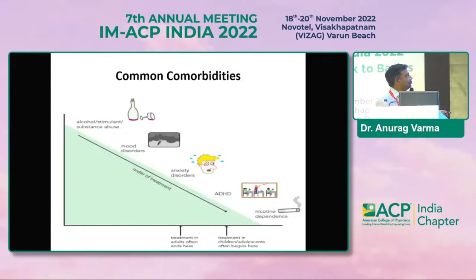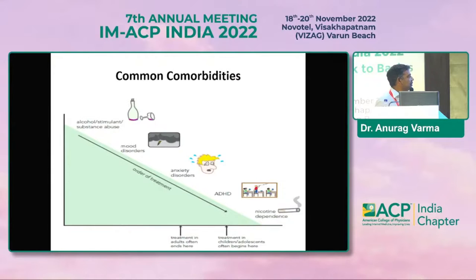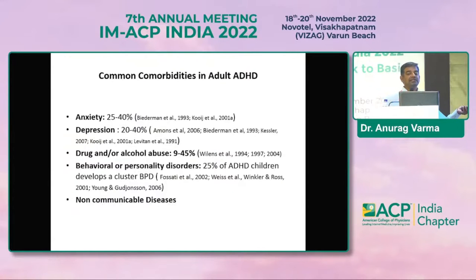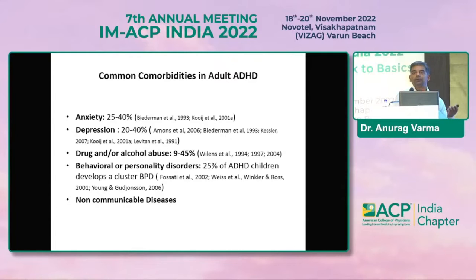In children you have certain kinds of comorbidities. With a slight change in adults, you have a lot of mood disorders and anxiety disorders. Nicotine addiction is a lot in ADHD — more than half the persons — because nicotine is supposedly activating and can actually be used as self-medication. Studies have shown that anxiety, depression, drug abuse, behavioral and personality issues, and non-communicable diseases are also more common in ADHD patients because of the lack of motivation to follow through.